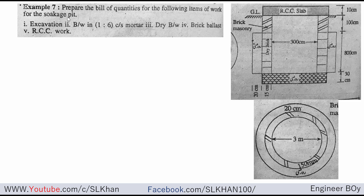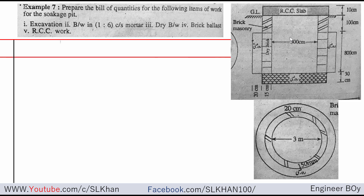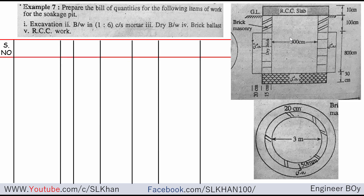As you can see in these diagrams, this represents the plan and this one is the cross section, or you can say long section. We're going to prepare the bill of quantities and I'm going to do this work in a nice table which contains the column of number, then the description, then the number of items, length, breadth, height or depth, and then the quantity and a remark column for detailing if needed.